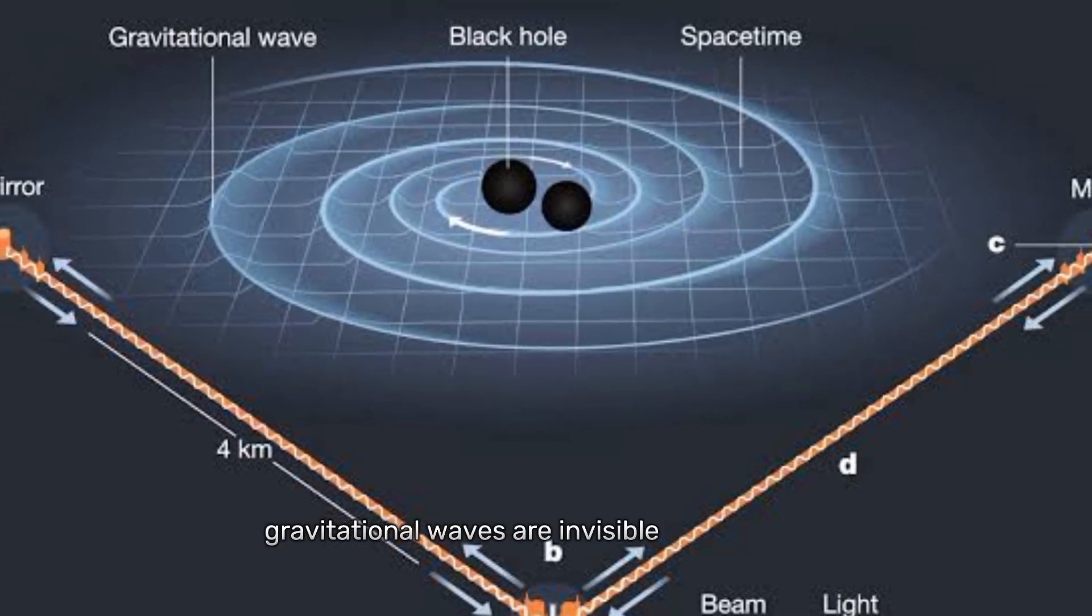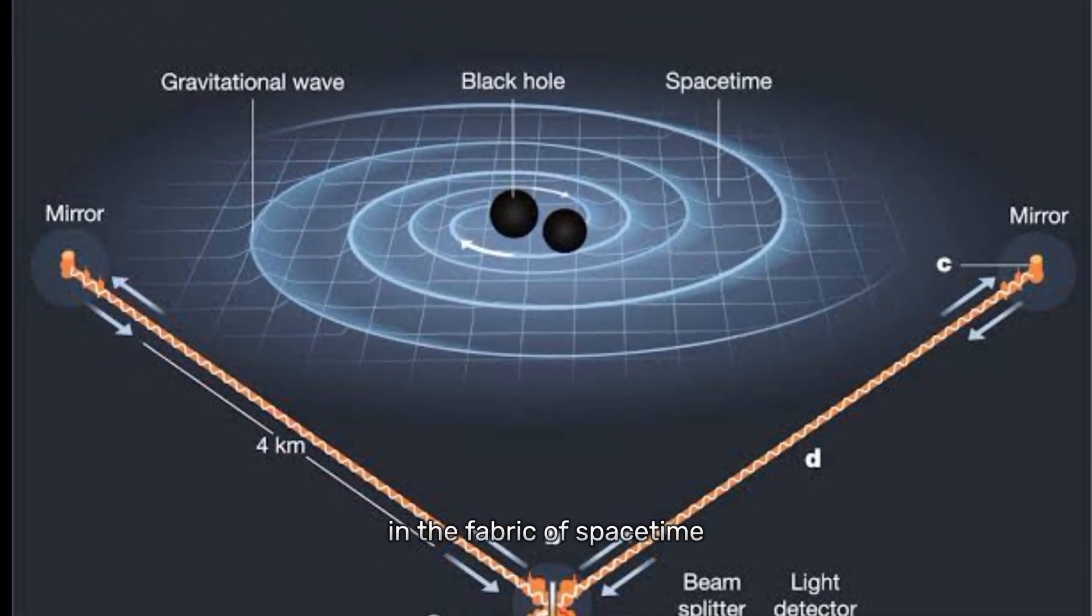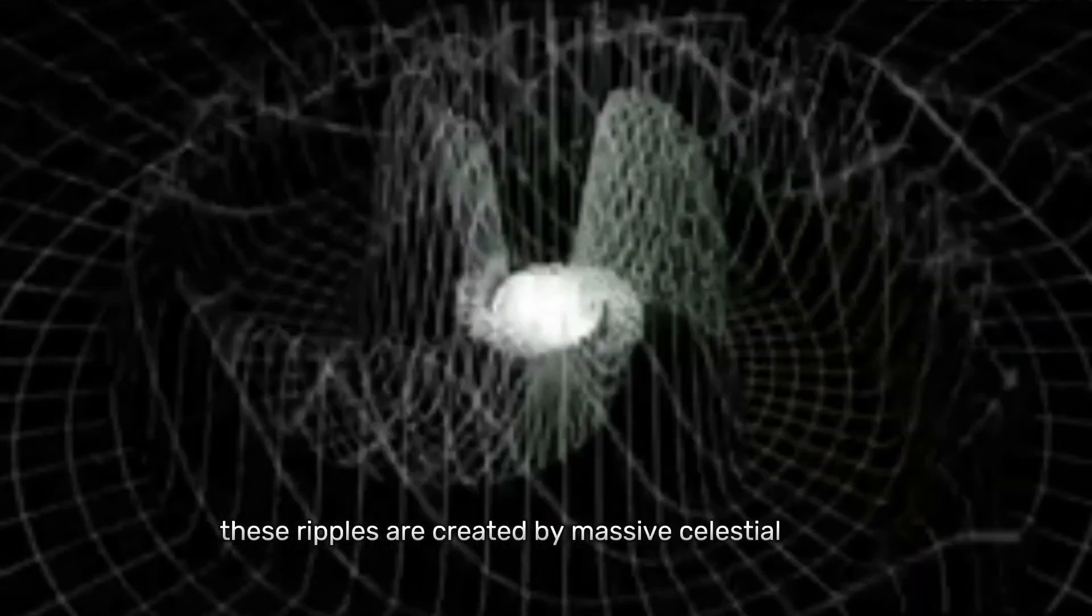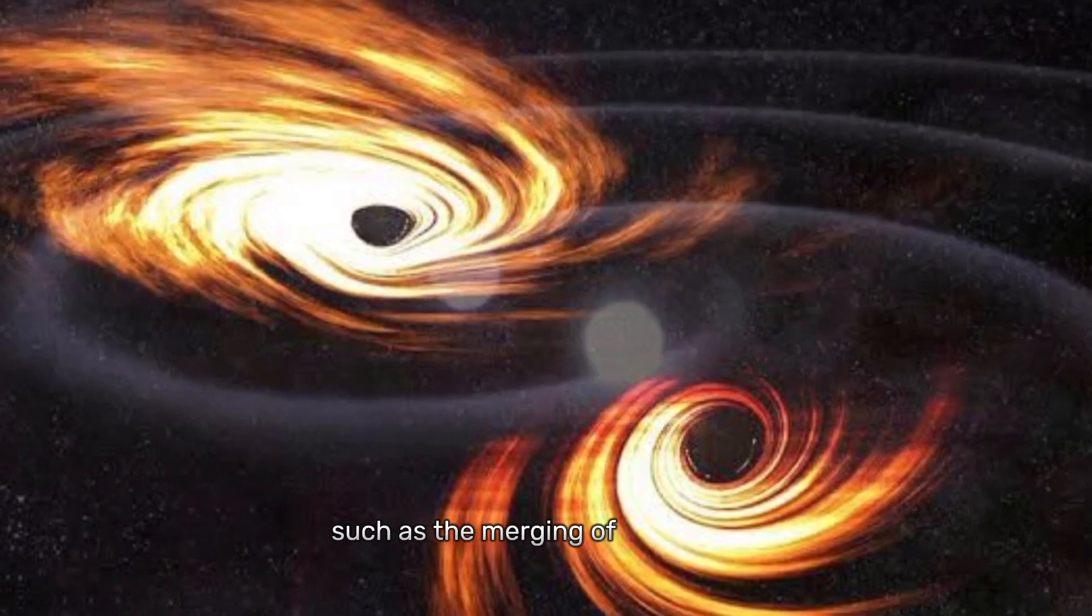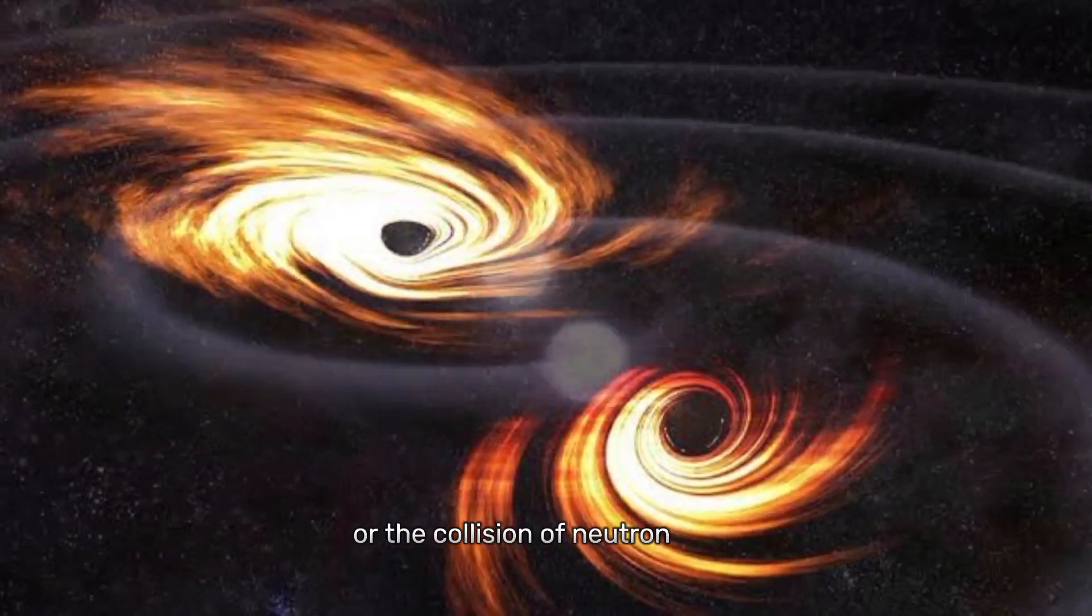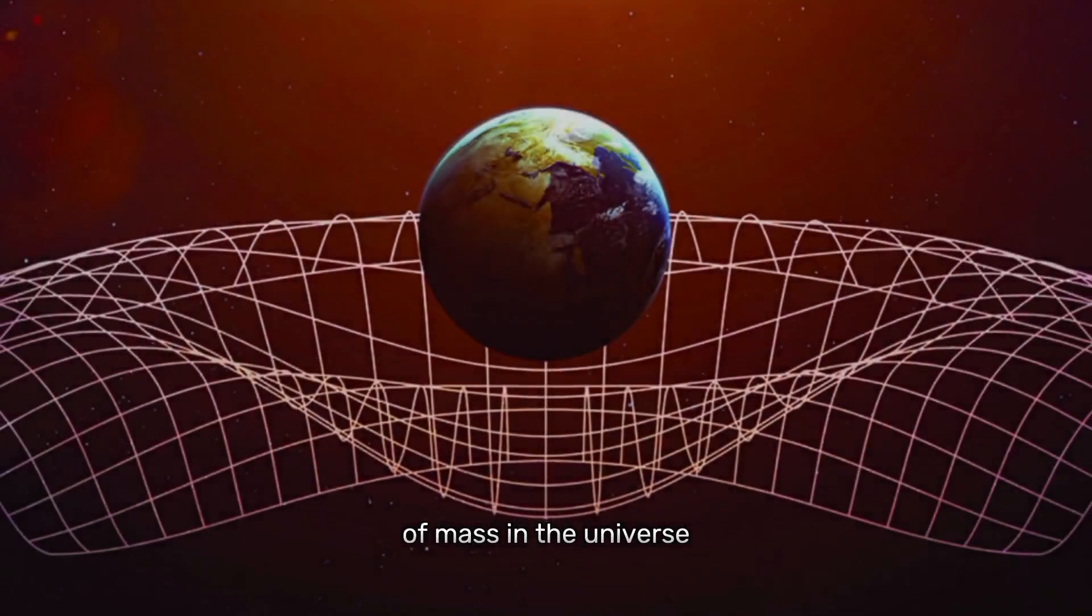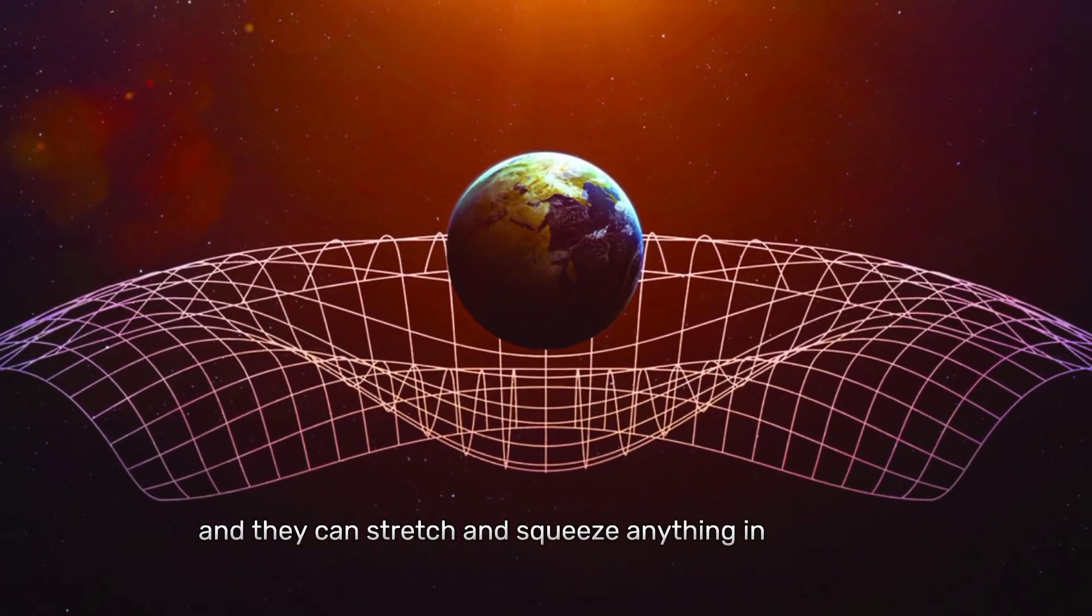Gravitational waves are invisible disturbances in the fabric of spacetime that travel at the speed of light. These ripples are created by massive celestial events such as the merging of black holes or the collision of neutron stars. They are caused by the acceleration of mass in the universe, and they can stretch and squeeze anything in their path.